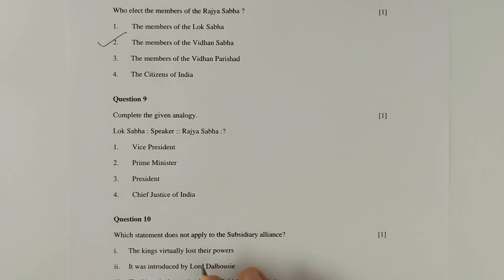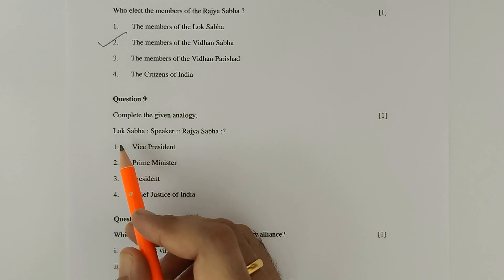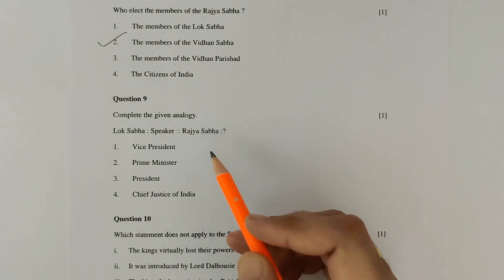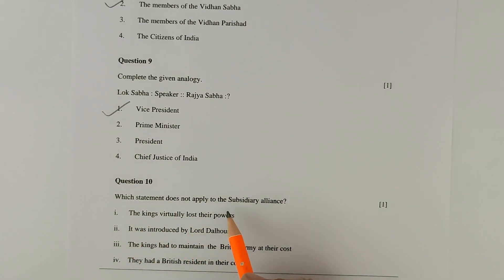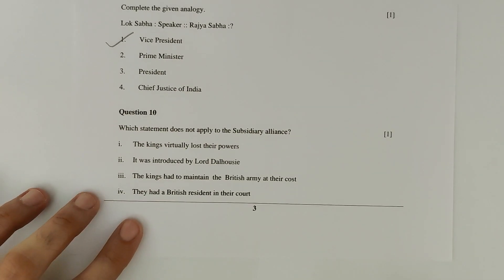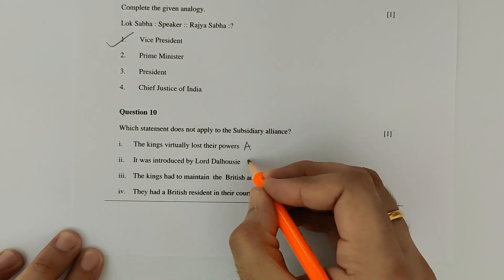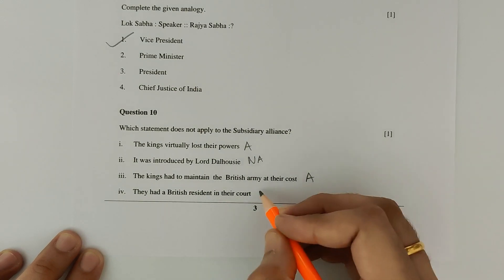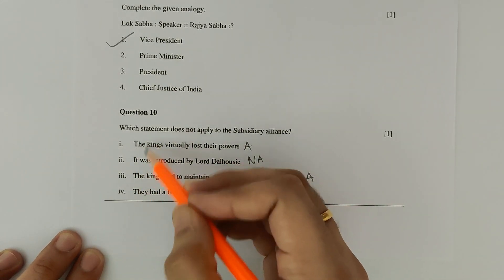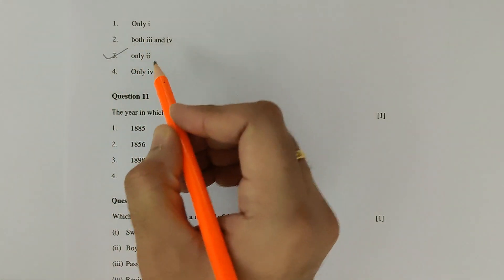Question 9 is an analogy: Lok Sabha is to Speaker as Rajya Sabha is to — ? The Speaker is the Ex Officio Chairman of the Lok Sabha, and the Vice President is the Ex Officio Chairman of the Rajya Sabha. Hence option 1, Vice President, is correct. Question 10: Which statement does not apply to Subsidiary Alliance? Statement 2 — 'It was introduced by Lord Dalhousie' — does not apply. The other three statements do apply. Hence option 3, only statement 2, is correct.